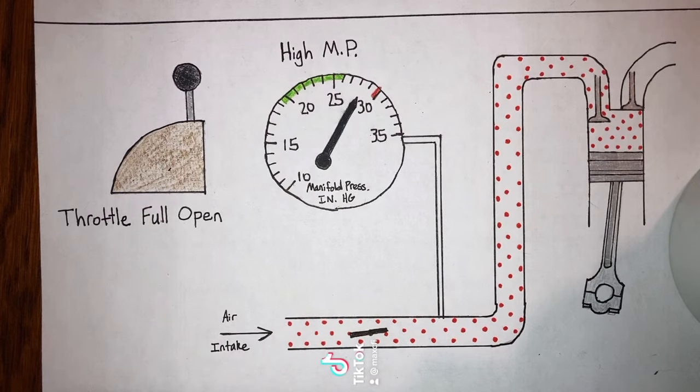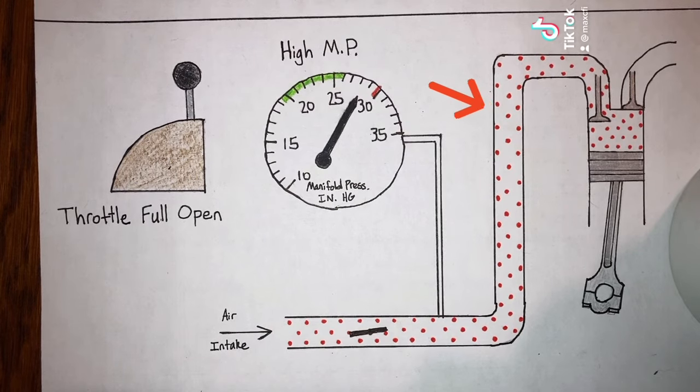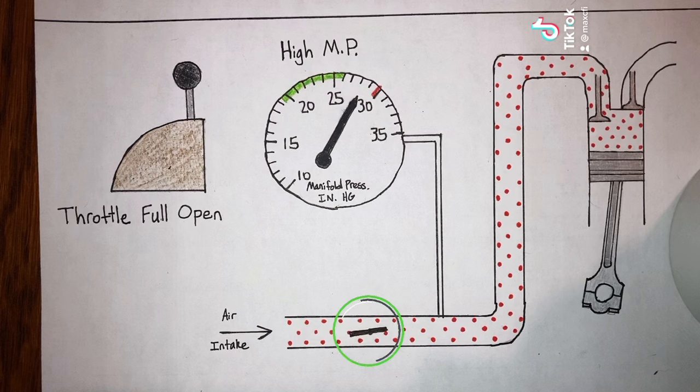Manifold pressure is just a reading of the air pressure in the engine air intake manifold, better known as the tubes that carry air to the cylinders. This reading is taken downstream of the throttle valve.